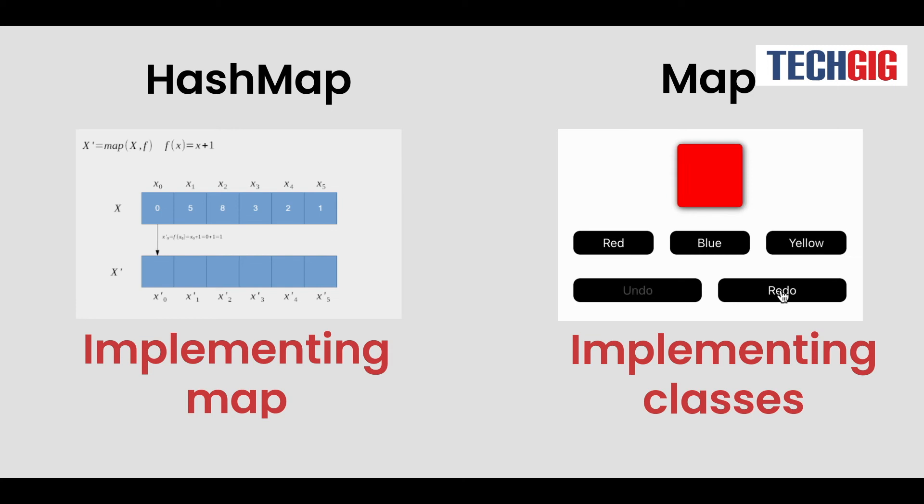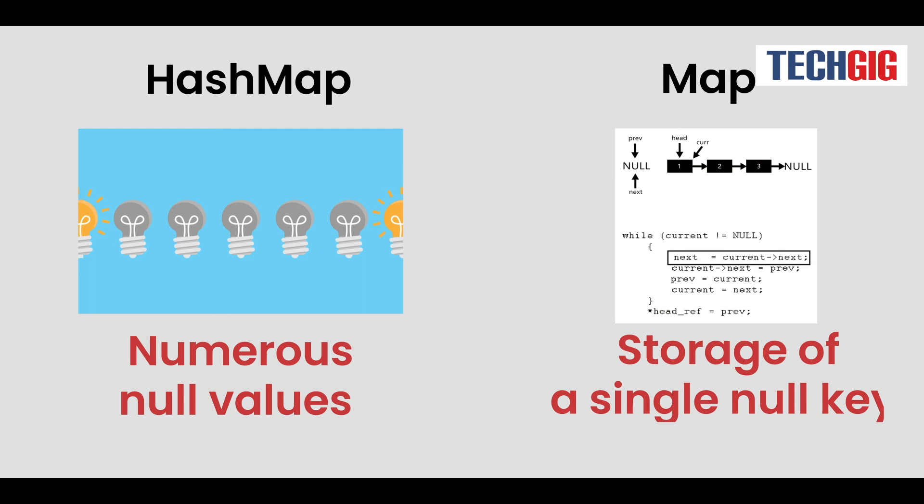HashMap, on the other hand, is all about implementing the Map interface. The Map does not allow for the storage of a single null key, whereas HashMap allows for the storage of numerous null values as well as a single null key.